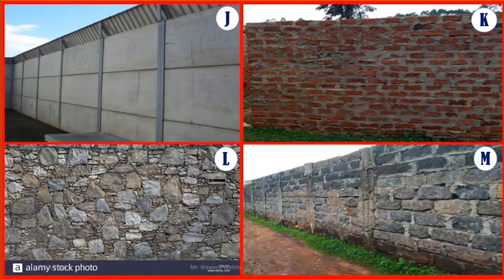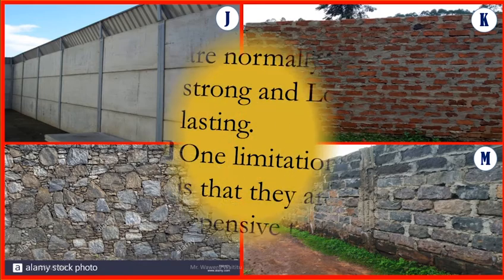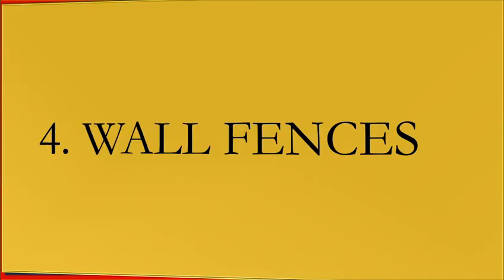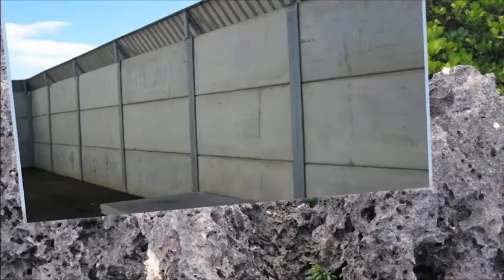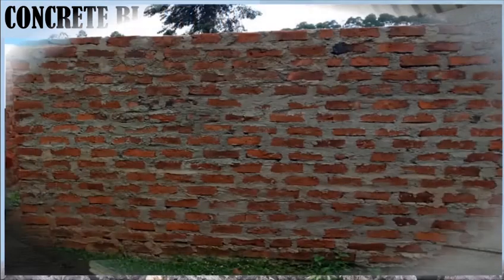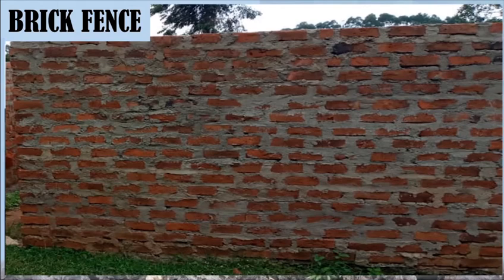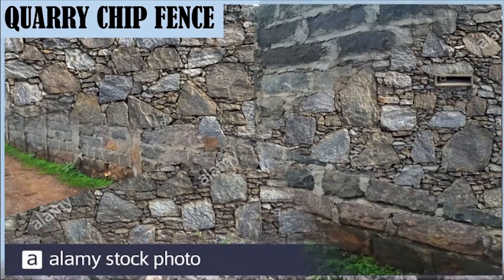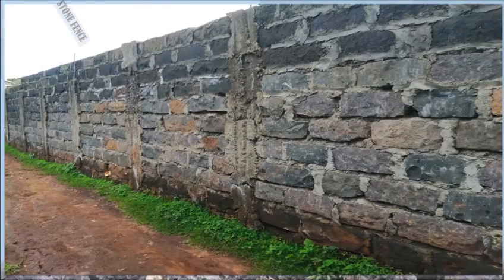Study fences J, K, L, and M carefully and identify them by name. These fences are wall fences. They are normally strong and long-lasting. The disadvantage of these fences is that they are expensive to construct. Fence J is a concrete block fence. Fence K is a brick fence. Fence L is a quarry chip fence. And fence M is a stone fence.